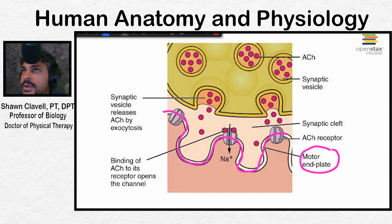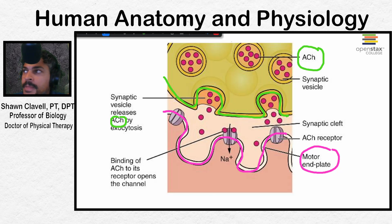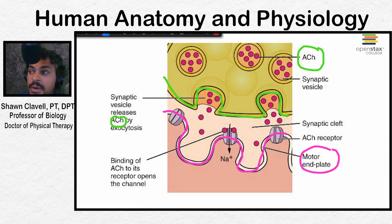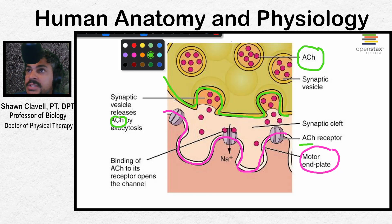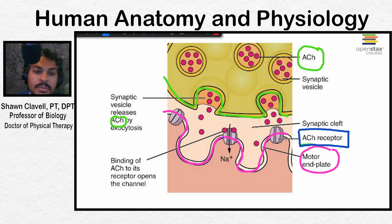The nerve here contains the neurotransmitter acetylcholine. It will always be acetylcholine when we're talking about a muscle contraction — abbreviated ACh. Acetylcholine will be released by the neuron and bind to the receptors located on the motor end plate. There is a synaptic cleft — the space just above it — which the neurotransmitter will drift across and then bind to the receptors on the motor end plate of the sarcolemma.